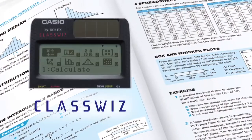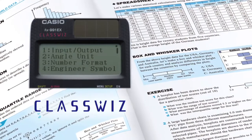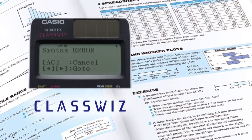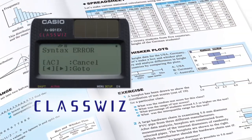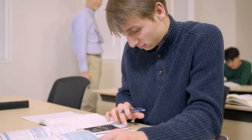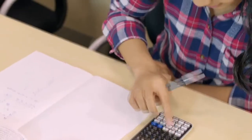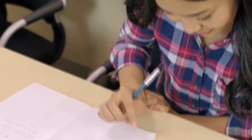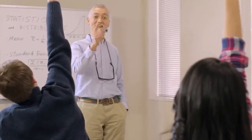The ClassWiz's high-resolution display makes possible a natural textbook display format and a smooth operating environment. Basic functions are easy to use. Even advanced mathematical calculations are simple to perform, and functions that take advantage of previously unavailable display capabilities are now possible.